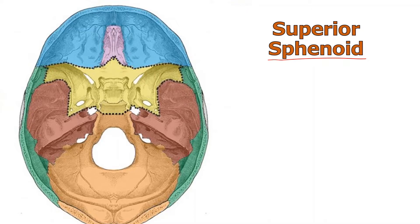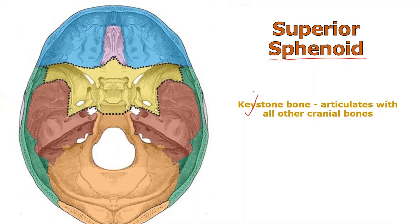This is a superior aspect and it's often referred to as a keystone bone. What that means is that it articulates with every other cranial bone. Notice how that yellow one does articulate with the blue, the pink, the green, the brown, and the tan colored occipital bone. So it's called the keystone bone of the cranium — the cranial keystone. I bet there's going to be a facial keystone bone in the facial bones too.